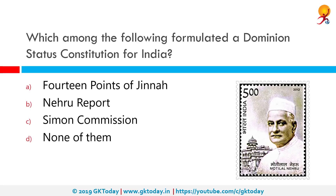Which among the following formulated a dominion status constitution for India? This was the Nehru Report, which was formulated by an all-parties conference headed by Motilal Nehru in the year 1928.